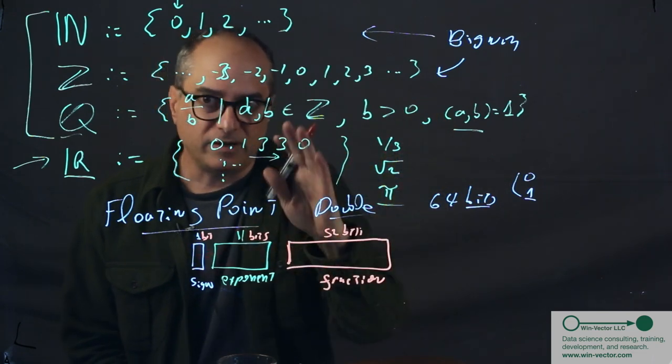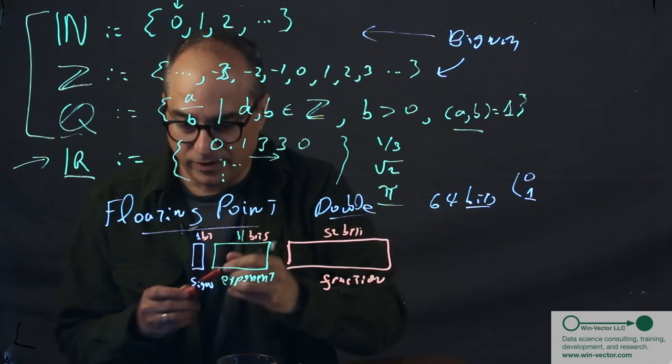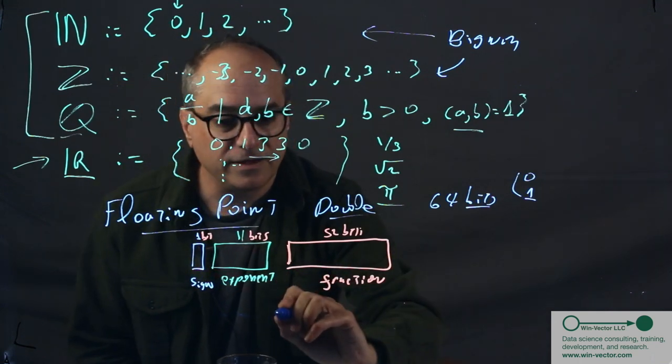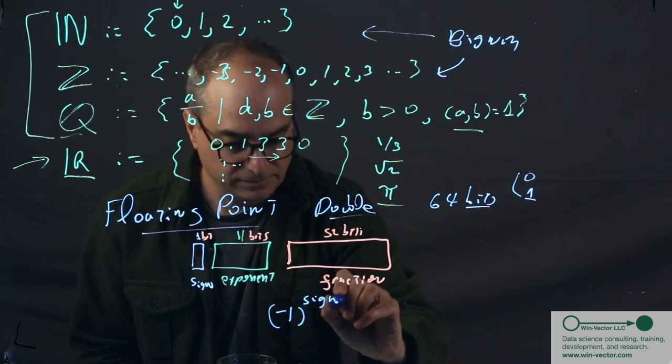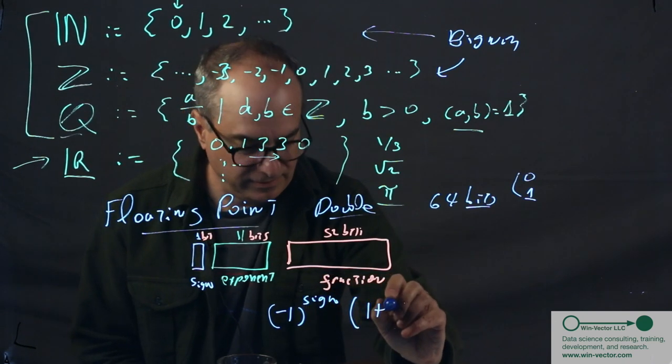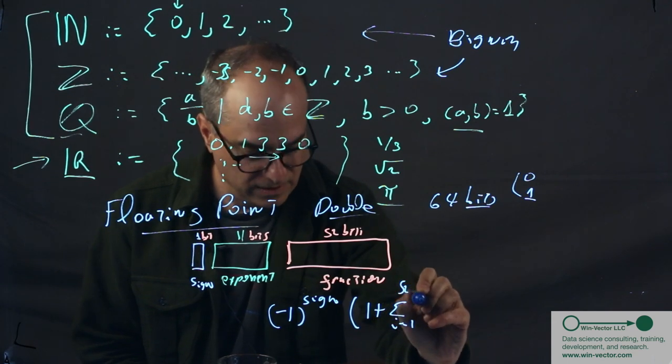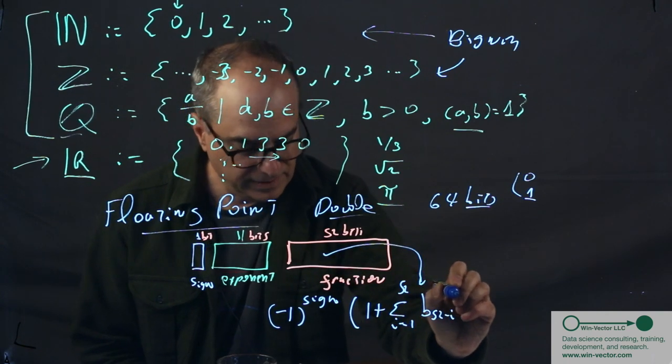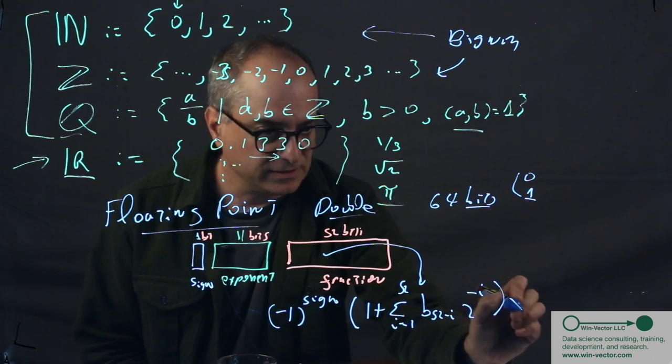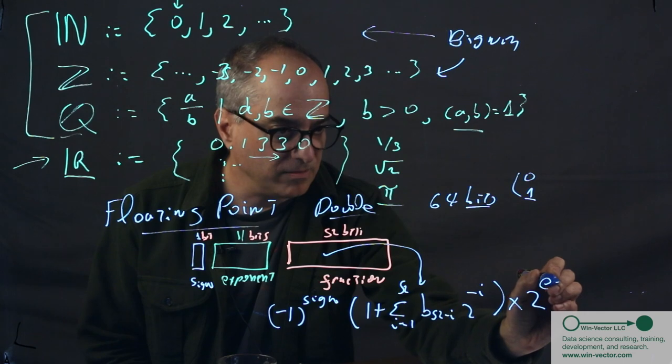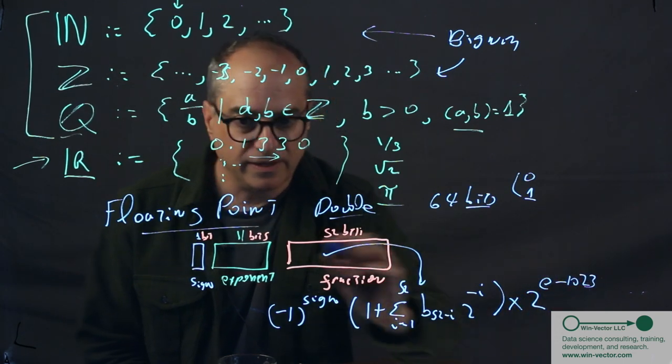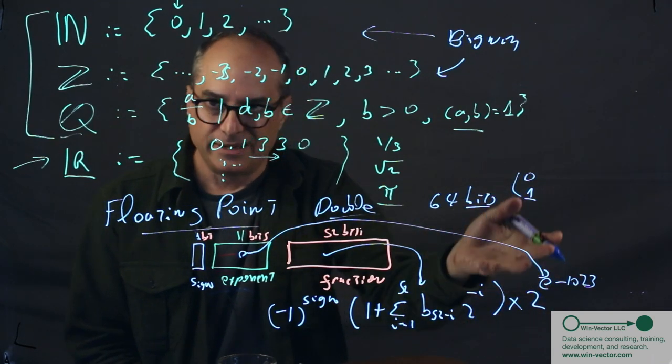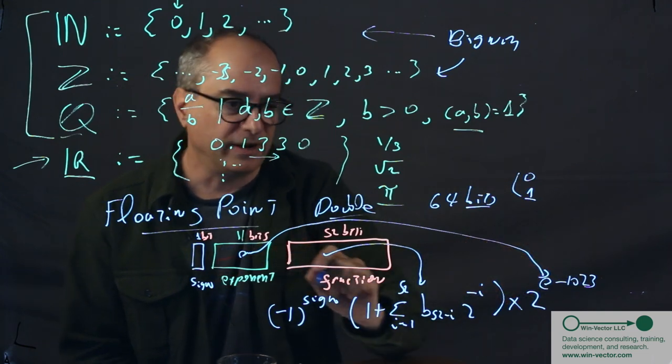In the normal mode, when the exponent is not one of the special symbols, the value of the floating point number is as follows. Negative 1 to the sign, times 1 plus, sum I equals 1 to 52, B sub 52 minus I, so it's pulling bits out of here, times 2 to the minus I, times 2 to the E minus 1023. This is E, the exponent. So not the natural exponent, but the number here.